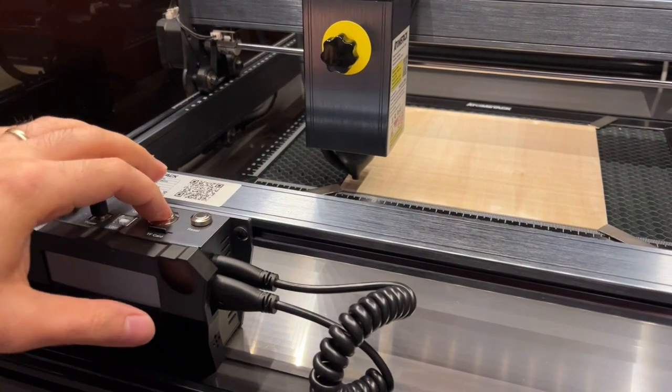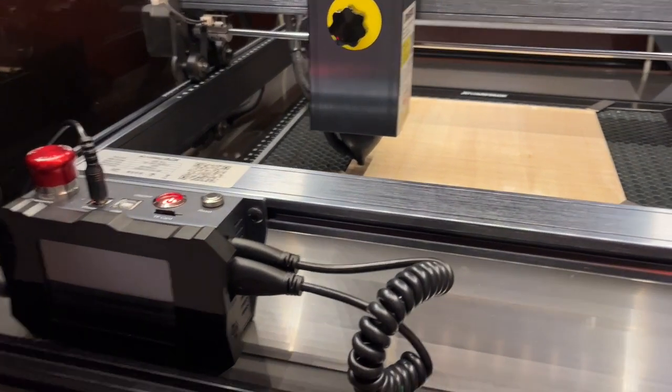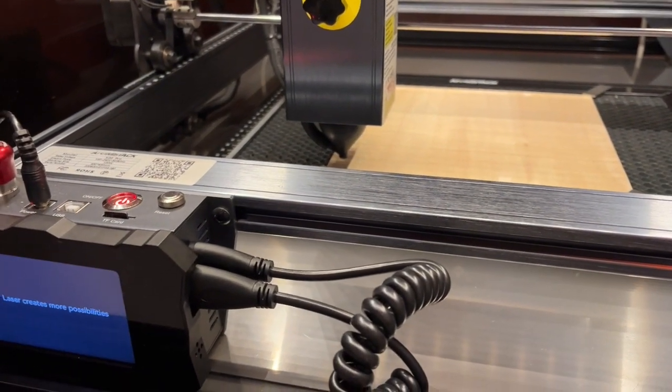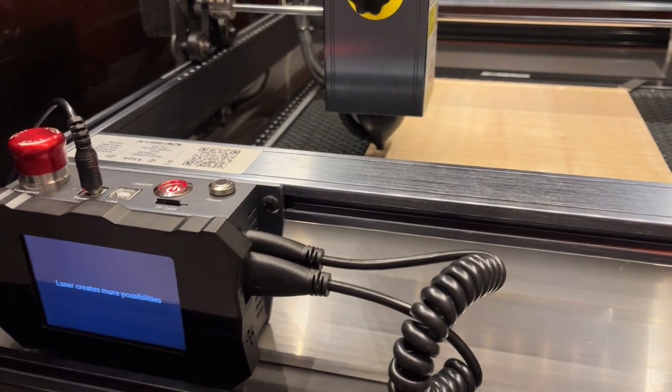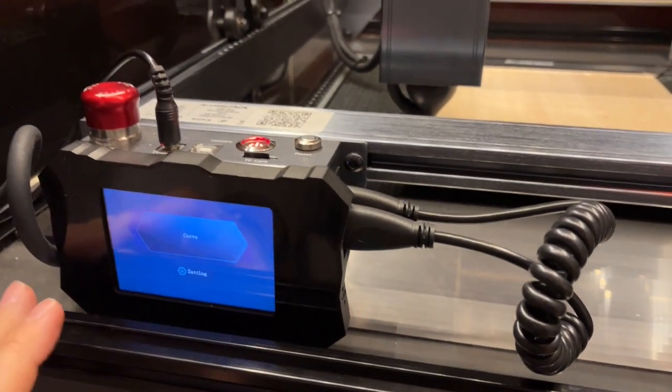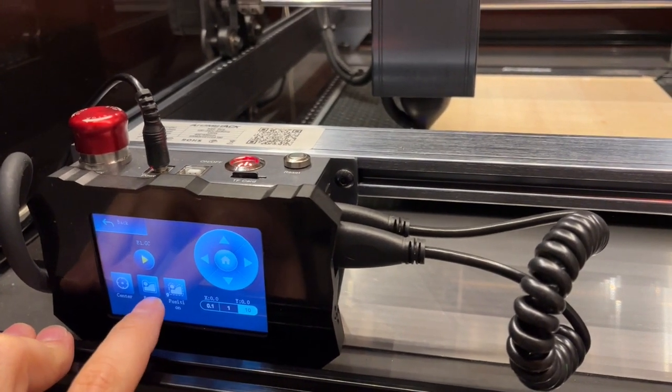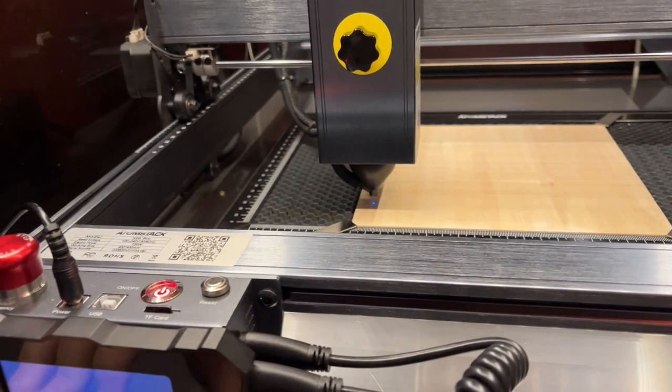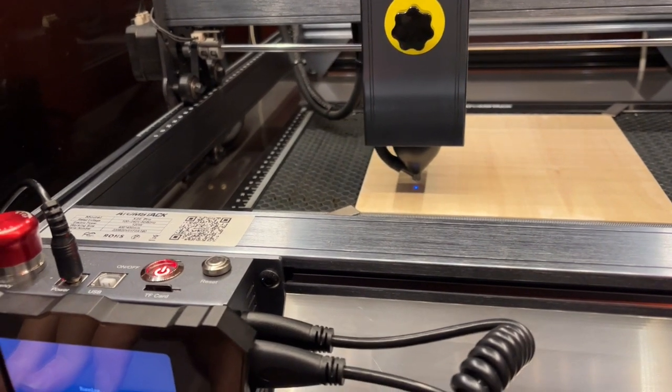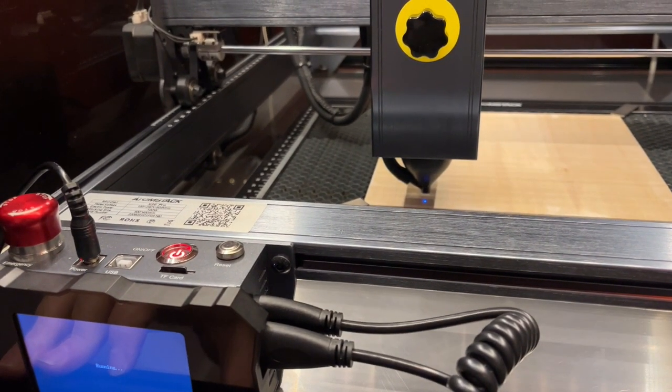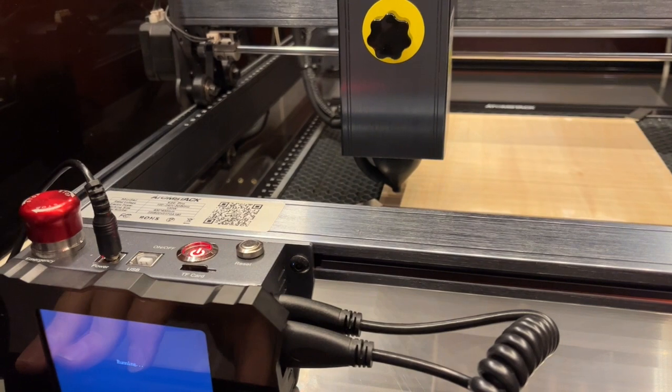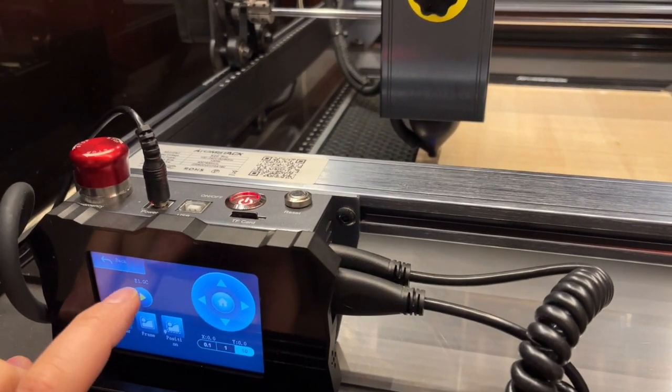So let's start the laser and open the file. Frame it to be sure that we are at the right spot and right size that we want to engrave. All good here, then run it.